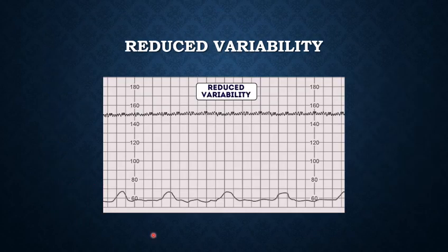In this picture we can see reduced variability, meaning the variability is less than 5 beats per minute.